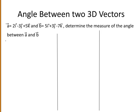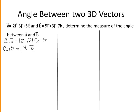From the definition of the dot product, we have vector a dotted with vector b is equal to the modulus of vector a times the modulus of vector b times the cosine of the angle between them. We previously rearranged this to give cos θ equals the dot product of vector a with b divided by the modulus of vector a times the modulus of vector b.